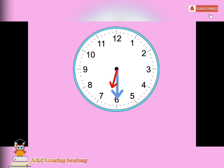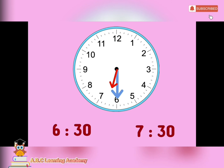How about this one? What is the time? Can you tell me? Is it 6:30, or is it 7:30? The answer is 6:30. Amazing. Why? Because the hour hand didn't yet reach the number 7.